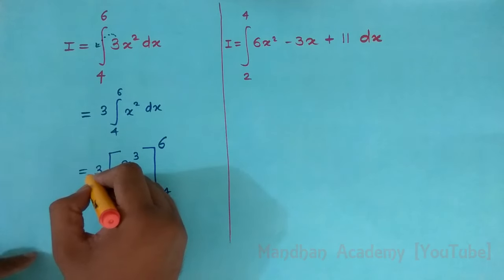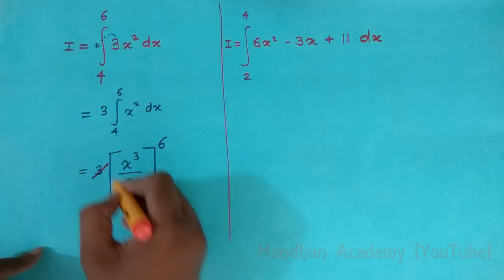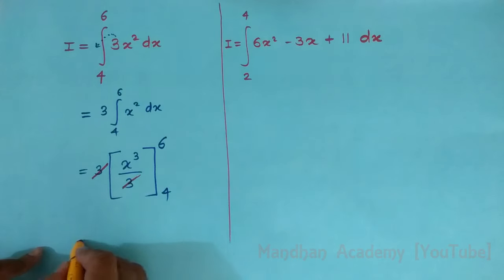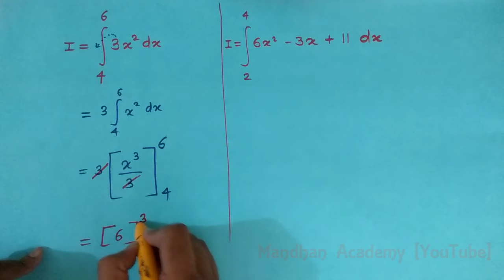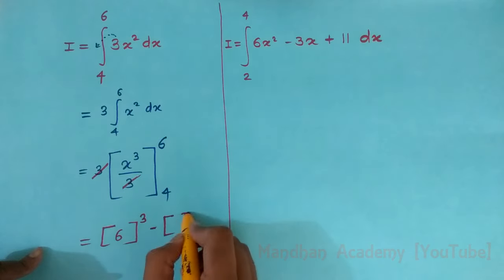Here you can see that 3 in 3 is getting cancelled. Now apply upper limit minus lower limit. In every place of x, apply upper limit that is 6 cube minus 4 cube.